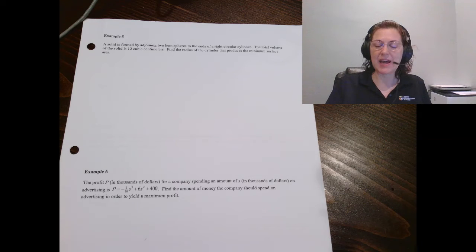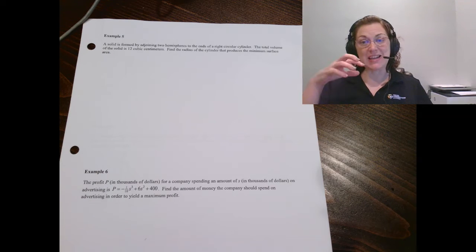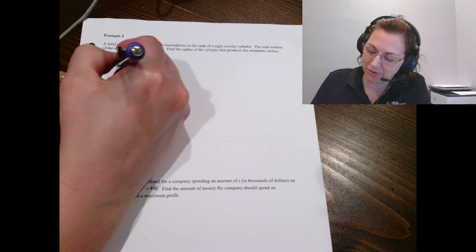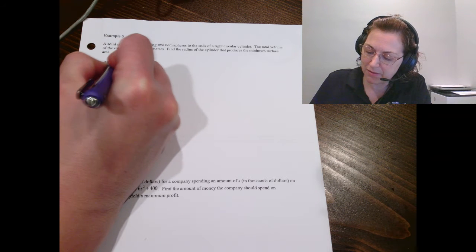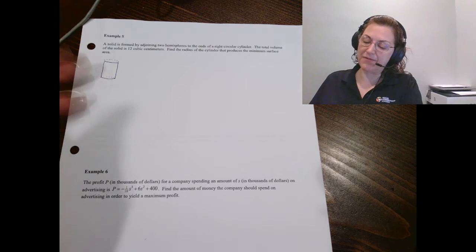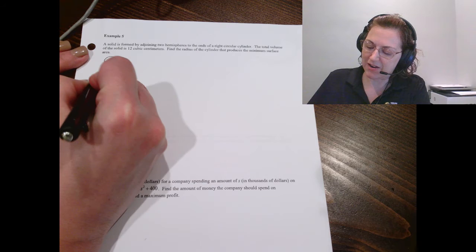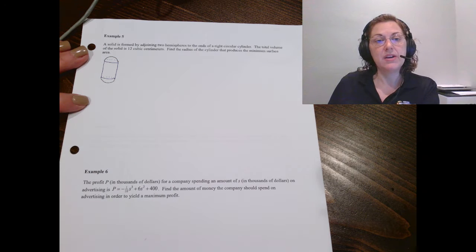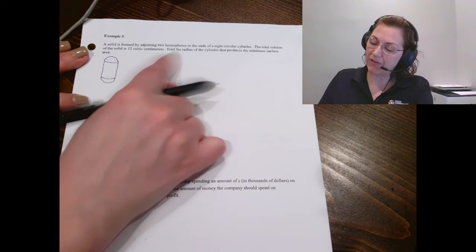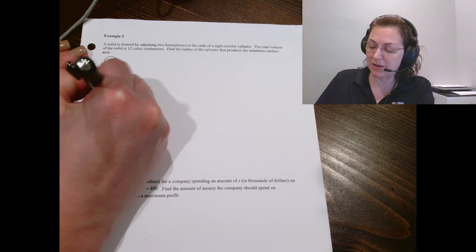So as we look at example 5 here, we're told that a solid is formed by two hemispheres on the ends of a right cylinder. I'm no artist, but this object might look something like this. You have your cylinder in the middle and then you have two hemispheres sitting on top of that. We're told the volume is 12 cubic centimeters. Find the radius of the cylinder that minimizes the surface area. So we're trying to minimize the surface area.